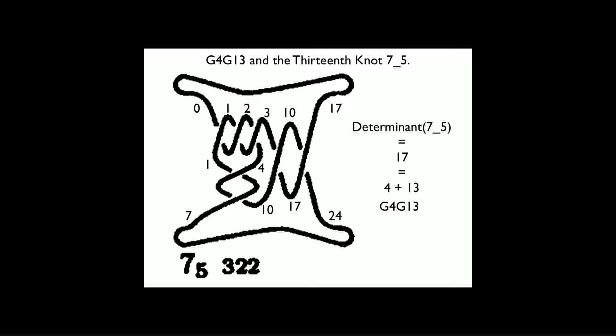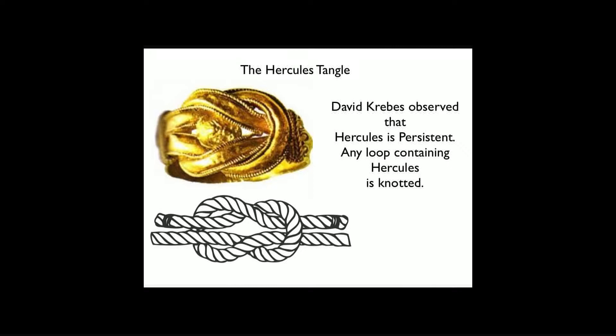This propagation of numbers on the diagram is actually calculating a determinant, which is a kind of mathematical trick. You notice that 17 is 4 plus 13, so I think the 13th knot is satisfying its role for the sake of G4G13.